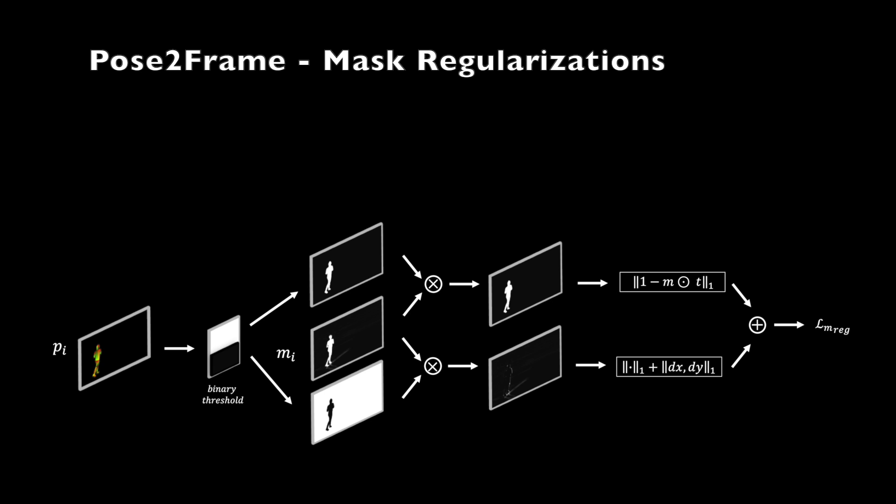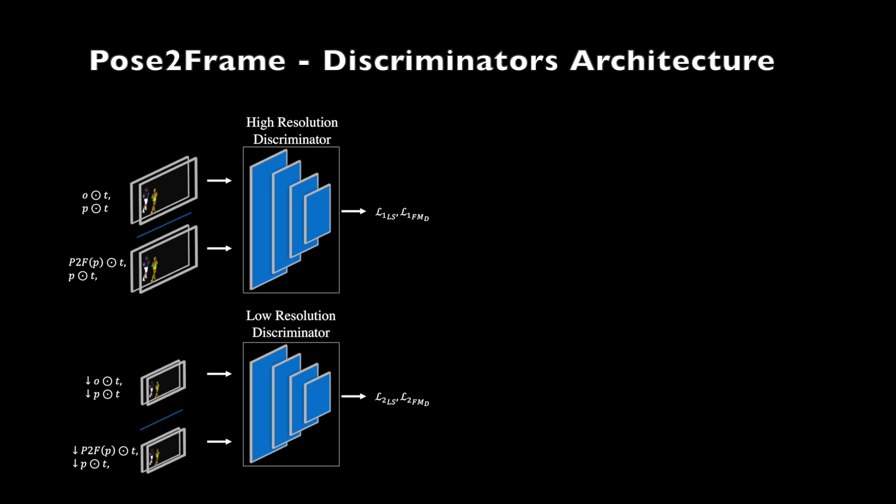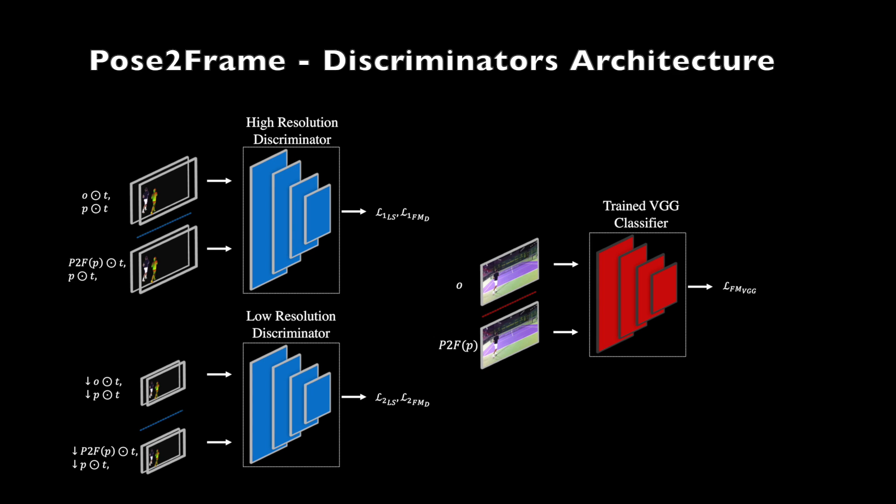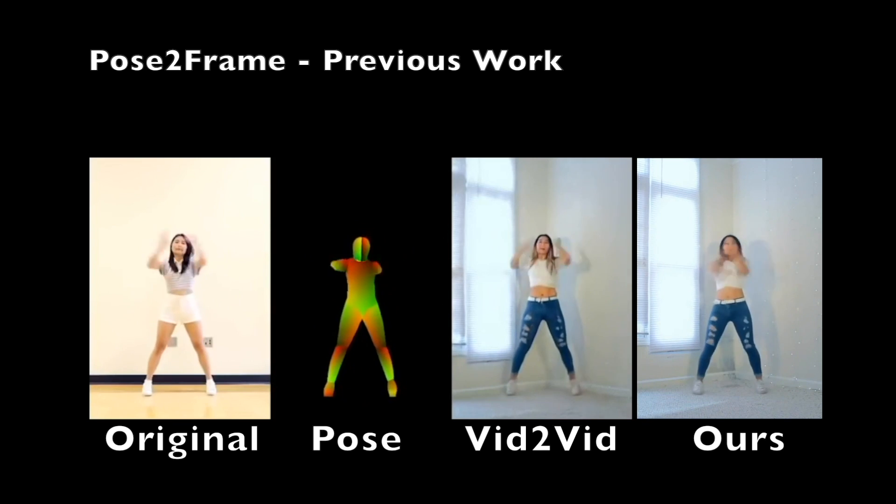Several regularization terms are applied over the mask, guiding it towards the desired function. We encourage the mask to be close to one where the character is present, and discourage it from attaining high values or high derivative values elsewhere. We use two discriminators for training the pose-to-frame network. The first focuses on the output frame, while the second focuses on a lower resolution of the output. Both discriminators are fed binary threshold images, focusing solely on the character. In addition, a feature-matching loss is applied on both discriminators and over a pre-trained VGG network.